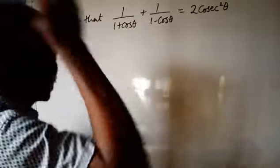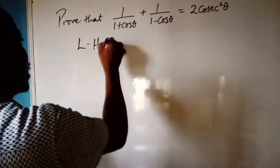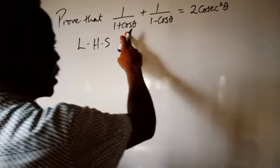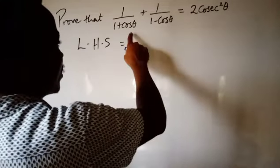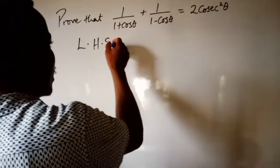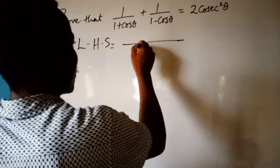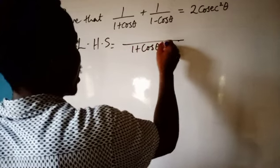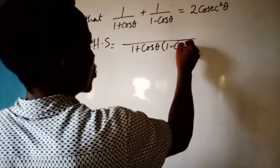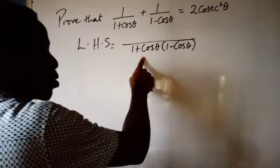Let us start with the left hand side. We can simplify this by taking the LCM. The LCM here is (1 plus cos theta) multiplied by (1 minus cos theta).